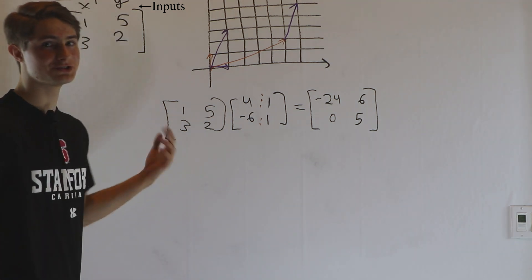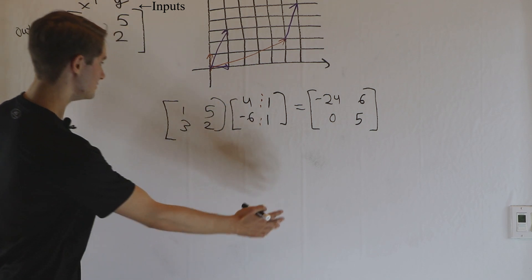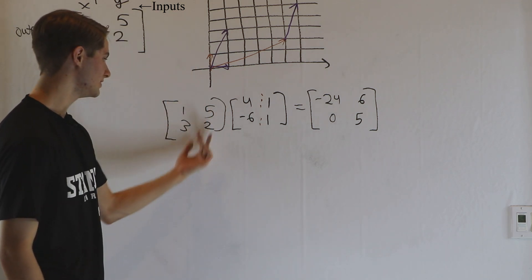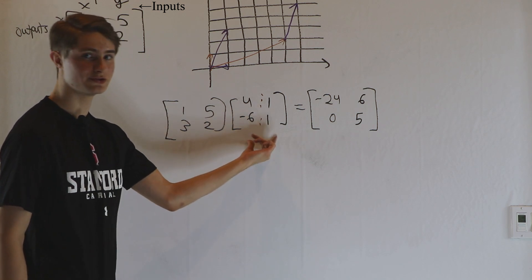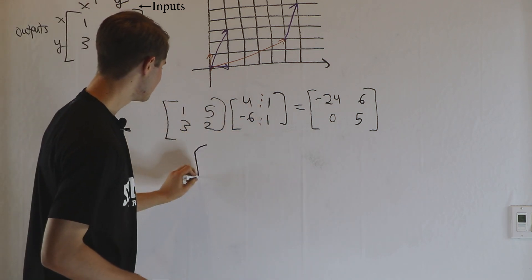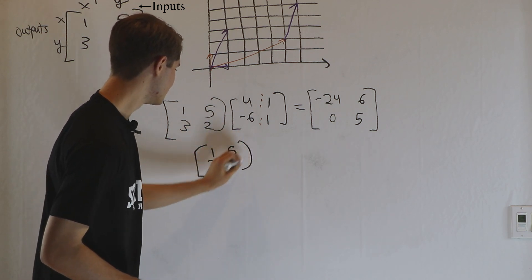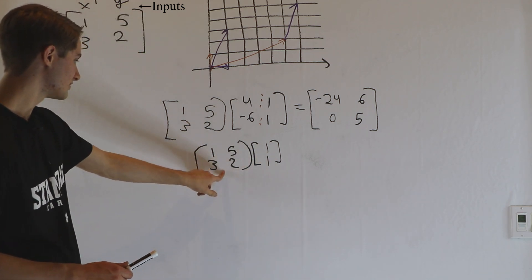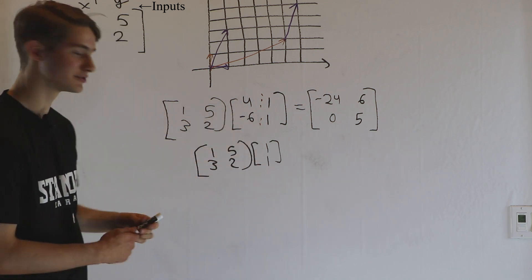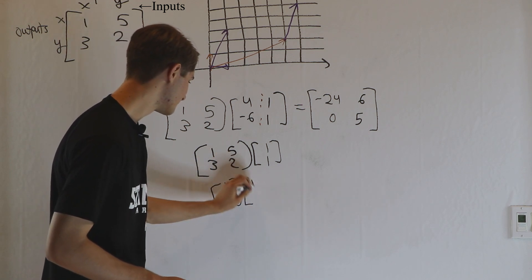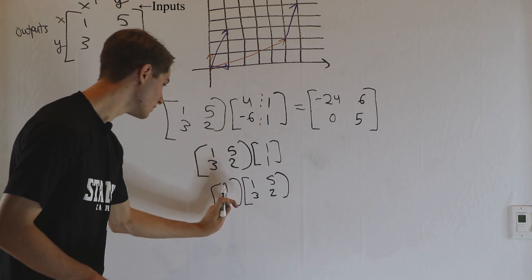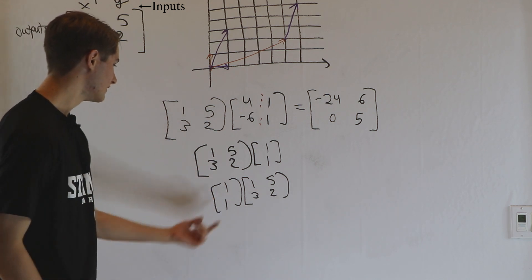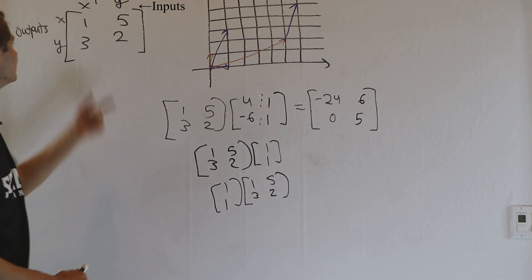And of course, everything here applies in three dimensions, four dimensions, or however many you want — just make your matrices bigger and do the exact same process. Now, you might have heard that the number of columns of the matrix on the left has to equal the number of rows of the matrix on the right. Let's look at why. When we multiplied our matrix by a 2×1 matrix — which is the same as a vector — we were able to do this because this matrix has two columns and this matrix has two rows.